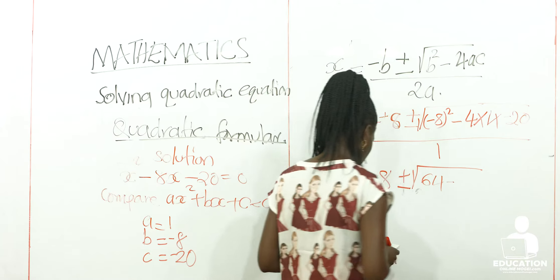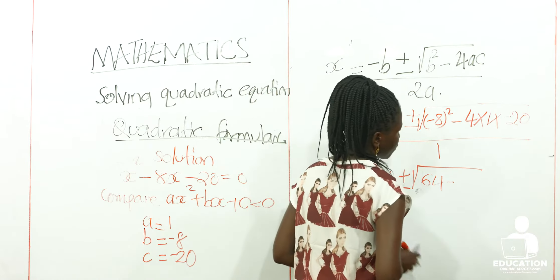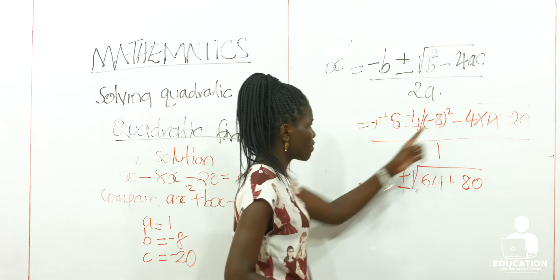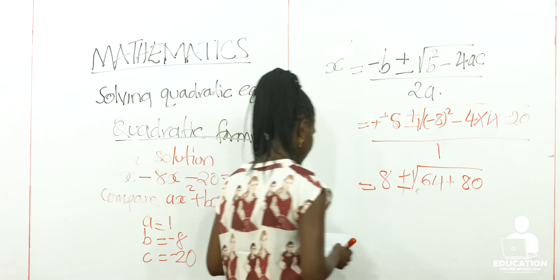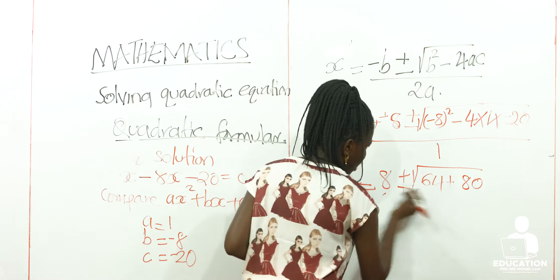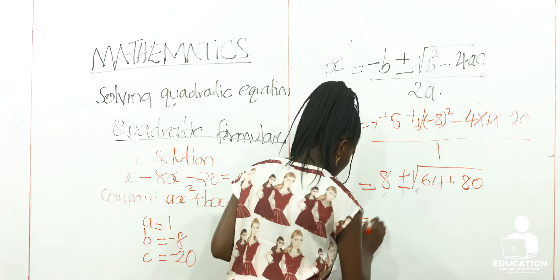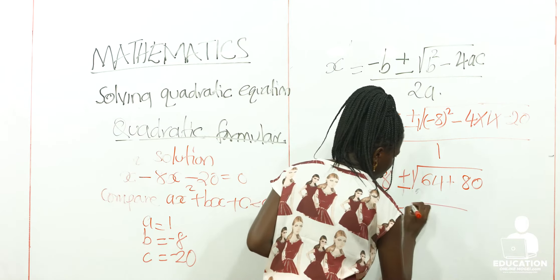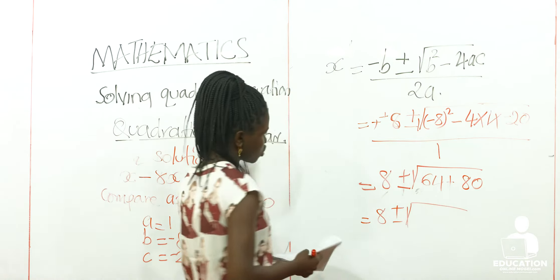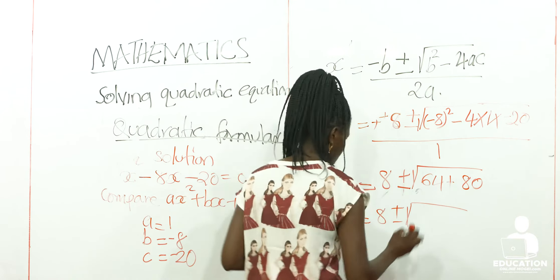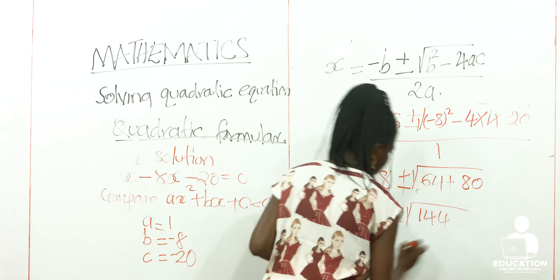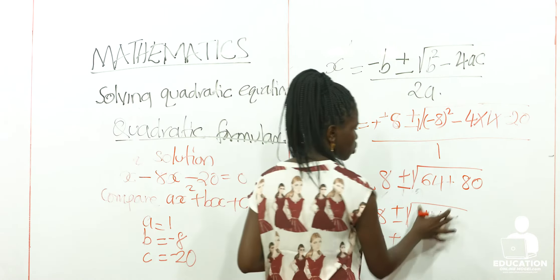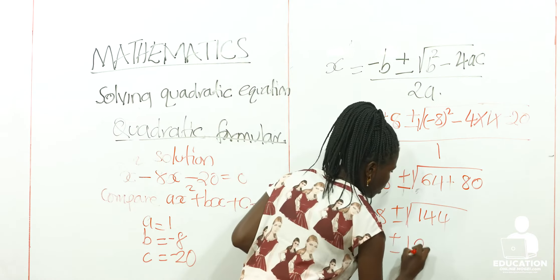So we shall have here 64 minus 4 times 1. This is a negative multiplying a negative, so when we multiply the 2 we get 4 times 2 is 8, and it should be positive because we have a negative times a negative. So we continue with positive 8, plus or minus root of — we add 64 plus 80 to give us 144. Then root of 144 is 12, so we shall have our 12.